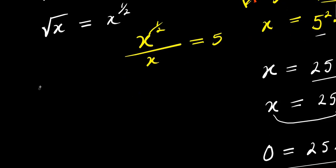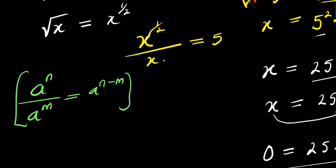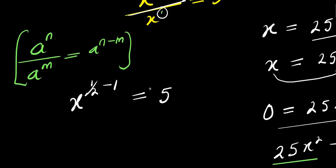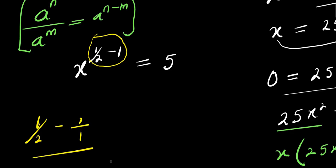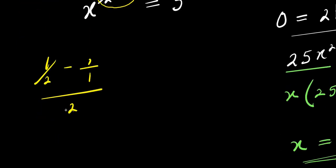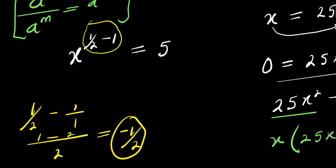Using the exponent rule: a^n divided by a^m equals a^(n minus m). Since this x in the denominator is raised to the power of 1, we subtract exponents. We get x to the power of (1/2 minus 1) equals 5. Computing 1/2 minus 1: finding the common denominator of 2, we get (1 minus 2) over 2, which is negative 1/2.